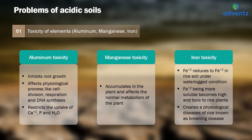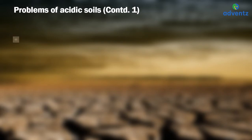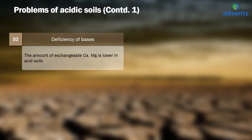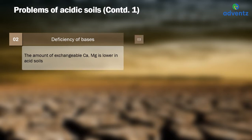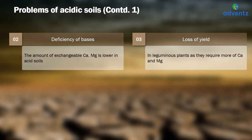The second problem of acidic soil is deficiency of bases. As acidic soil develops in humid areas with high rainfall, basic cations like calcium and magnesium are leached out from the soil, resulting in their deficiency. The third problem is loss of yield in legumes. The growth and development of leguminous plants suffers in acid soils as they require more calcium and magnesium, which acid soils are not able to provide.